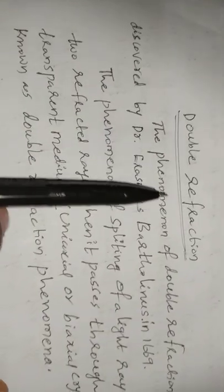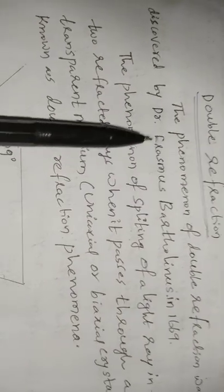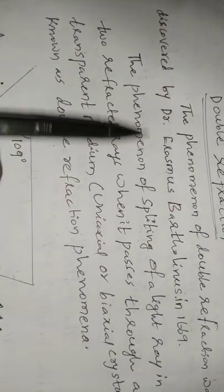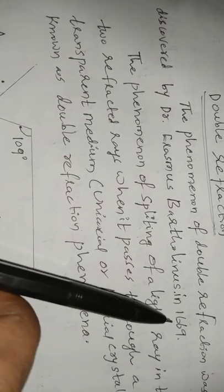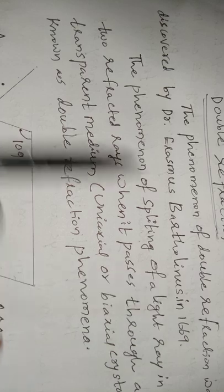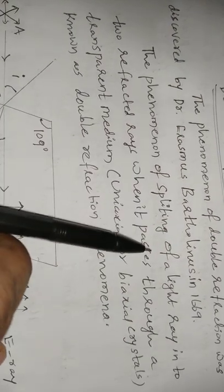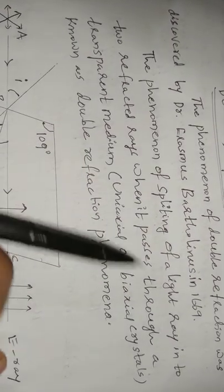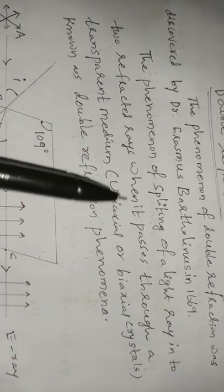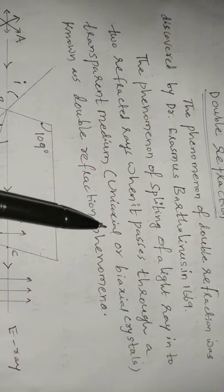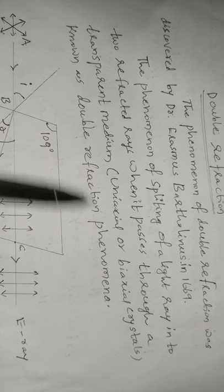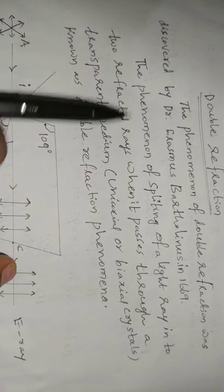The phenomenon of double refraction was discovered by Dr. Erasmus Bartholinus in 1669. It is the phenomenon of splitting of a light ray into two refracted rays when it passes through a transparent medium — that is, uniaxial or biaxial crystals — known as the double refraction phenomenon.